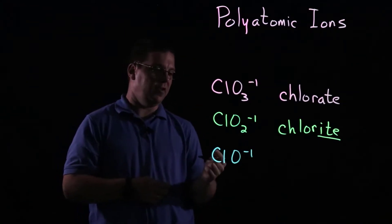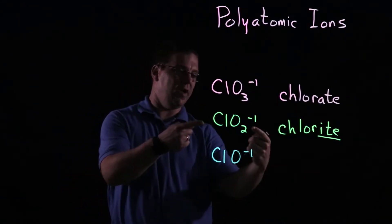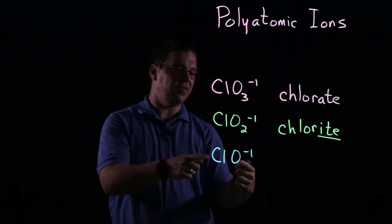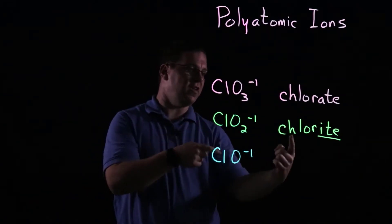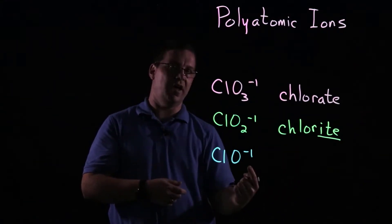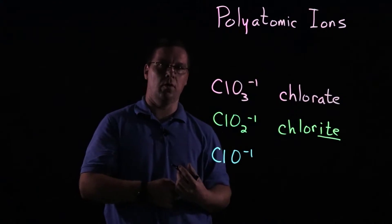And so the formula ClO, which now has taken away yet another oxygen, still the same charge. Obviously, these two are different, so the names are going to have to be different as well, and the name for this ion is hypochlorite.